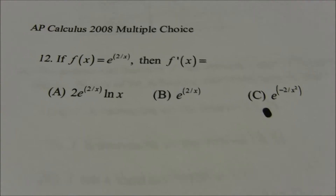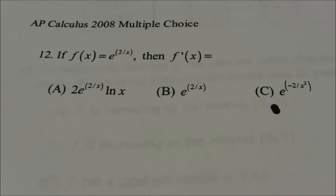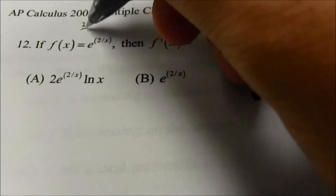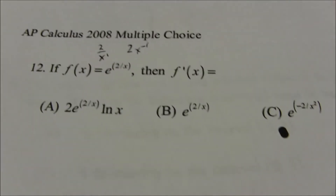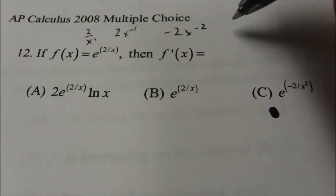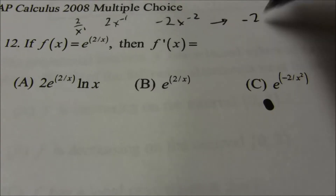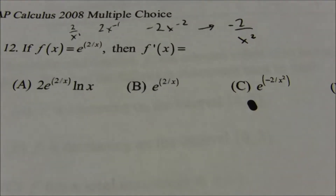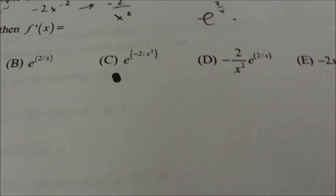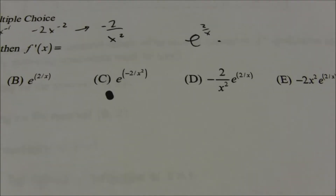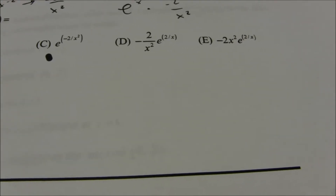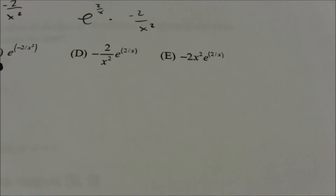Number 12: we want the derivative of e to the 2/x. I rewrite 2/x as 2x to the negative 1. The derivative of 2x to the negative 1 is negative 2x to the negative 2, which is negative 2 over x squared. Since e to the x is its own derivative, the result is e to the 2/x multiplied by the derivative of the inside function: negative 2 over x squared. That is choice D.